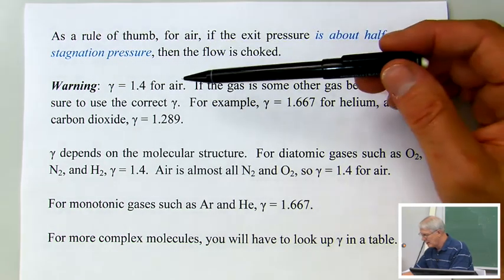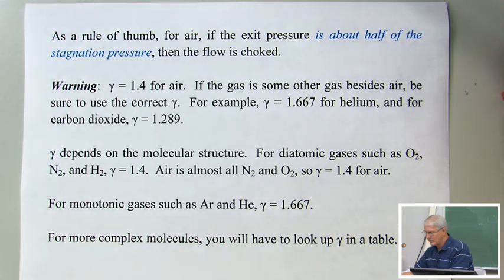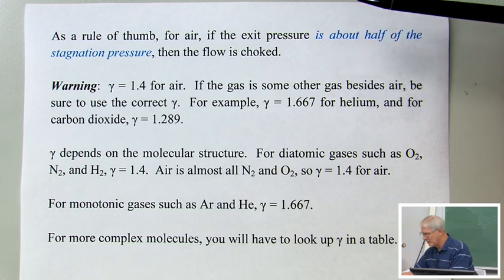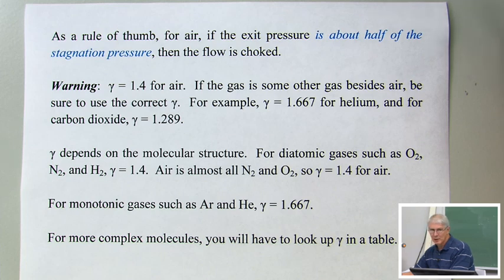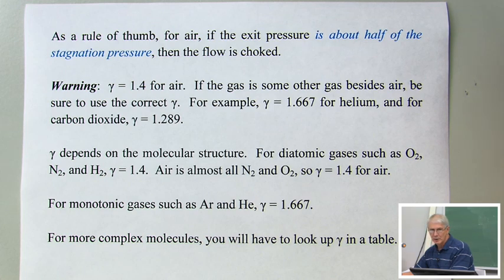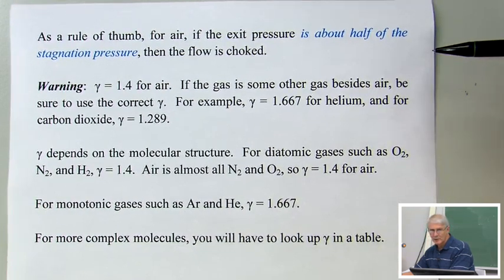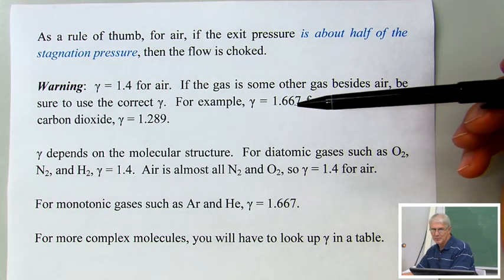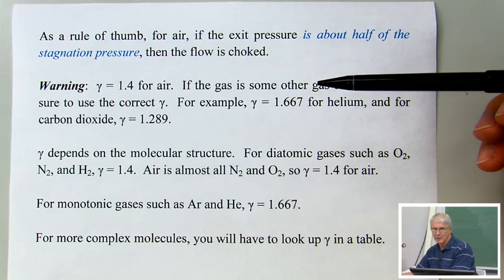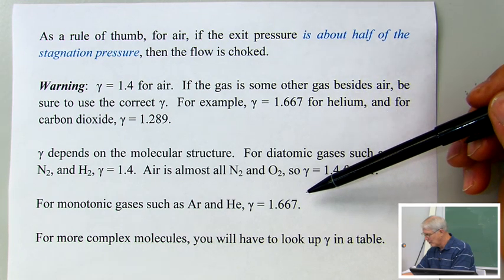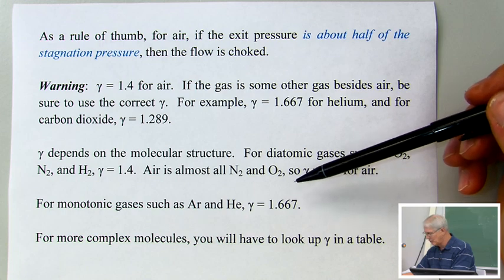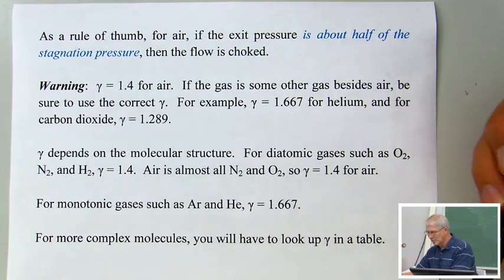Note that gamma equals 1.4 for air. If the gas is something other than air, be sure to use the correct gamma. For example, helium has gamma of 1.667, and carbon dioxide has gamma of 1.289. Gamma depends on molecular structure. For diatomic gases such as oxygen and nitrogen, gamma is 1.4. Since air is almost all nitrogen and oxygen, it's essentially a diatomic gas. For monatomic gases like argon and helium, gamma is 1.667. For more complex molecules like carbon dioxide, you'll need to look up gamma in a table.